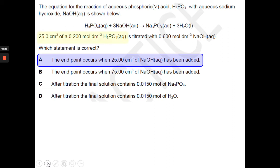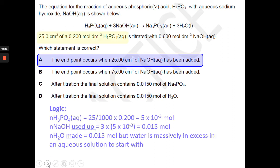So first of all, looking at the data we're given, we can work out the number of moles of H3PO4 that's used. It's 5 times 10 to the minus 3. So if we multiply that by 3, then that gives us 0.015 moles of NaOH used up. Now notice it says used up.